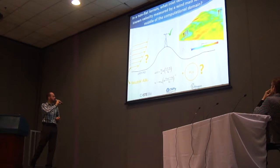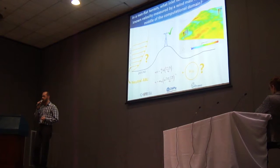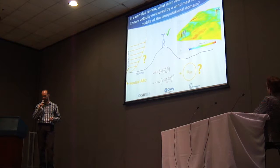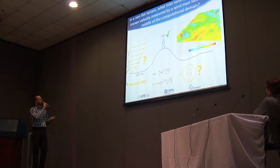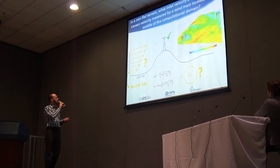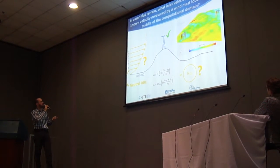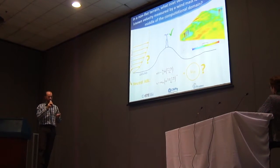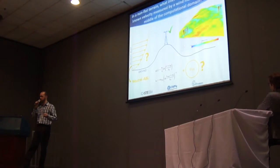We can start by applying the neutral atmospheric boundary layer theory found in the literature since Richards and Hoxey, 1993. This ABL modeling uses a reference velocity — which here we are calling U_N — that is the inlet reference velocity at some height z-ref. But this inlet reference velocity is also something we don't know how to obtain directly.